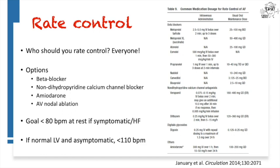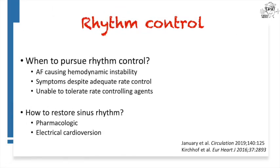The rate control goal is less than 80 beats per minute resting heart rate, particularly if they're symptomatic or have heart failure. In cases where rate control is difficult but LV function is normal and the patient is asymptomatic, you can be more lenient. Moving on to rhythm control — when do we pursue it? Acutely, in a patient with atrial fibrillation causing hemodynamic instability. It's very rare that AFib alone causes instability or cardiogenic shock; it almost always happens with an associated condition, and you must decide which is contributing more.